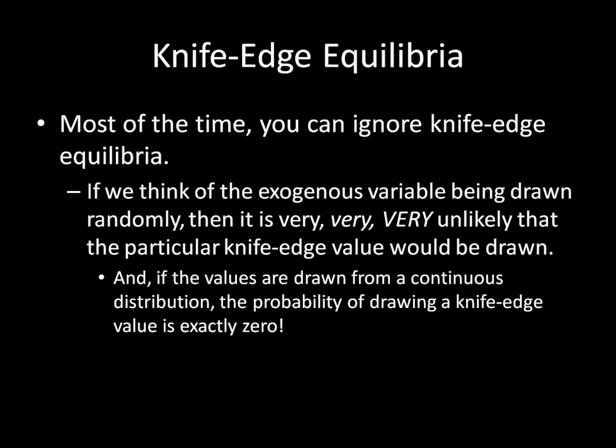And in fact, if you've had a little bit of probability theory in the past, then you'd know that if we instead assume that the value is drawn from a continuous distribution, then the probability of drawing a knife-edge value or essentially an exact particular value from a continuous distribution is actually zero.